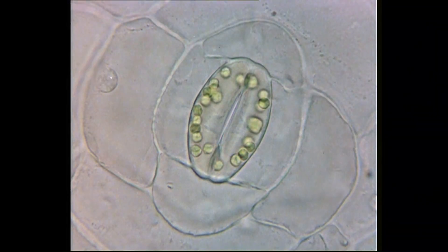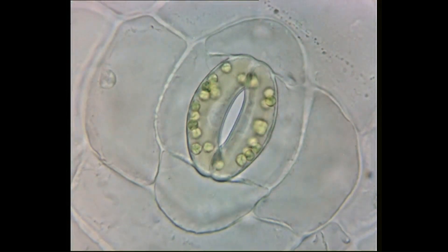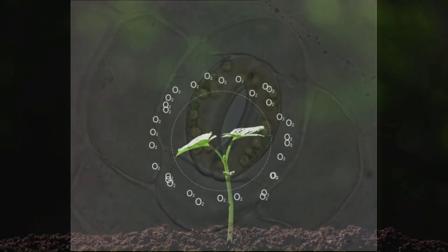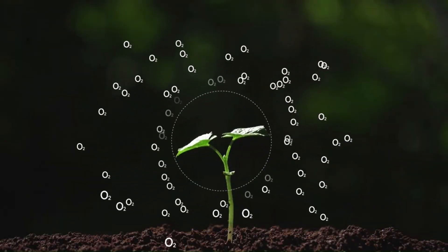Stomata are tiny pores found mostly on the underside of leaves. Imagine them as the nose and mouth of the plant. Their main job? To help plants breathe and exchange gases. Pretty cool, right?